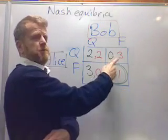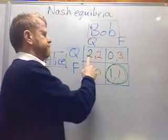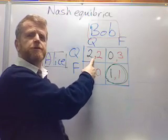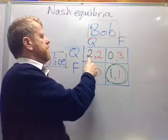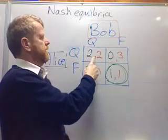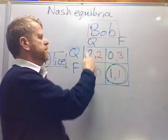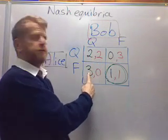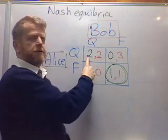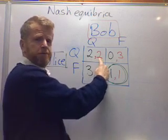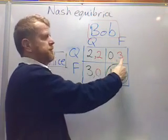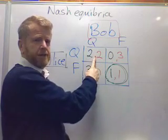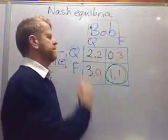Similarly for this square, you just swap the roles of Alice and Bob. What about the outcome where both are quiet — can that be a Nash Equilibria? The answer is no. If they're both being quiet, Alice can think and be better off because three is better than two. Equivalently, Bob can think and be better off because three is better than two. So both of them have an incentive to change, and that's why this is not a Nash Equilibria.